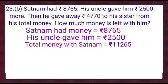So, the total money with Satnam is, yes, we will add Rs. 8,765 and Rs. 2500 and total money will be equal to Rs. 11,265. On adding, we will get this amount.